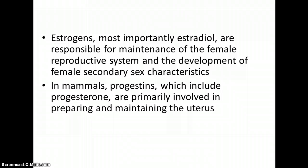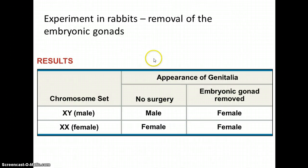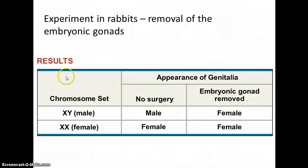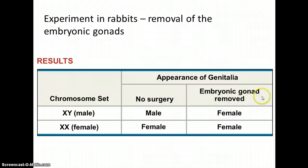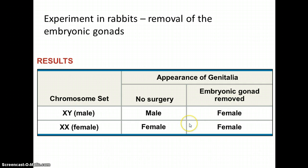Estrogens from the ovaries are involved with the female cycle and maintaining the uterus during pregnancy. Every male mammal starts out embryonically as female, but with the presence of the Y chromosome, those undifferentiated parts develop into male parts because of higher levels of androgens. In an experiment with embryonic rabbits, removing the gonads meant that even XY individuals developed as females, because they lacked the testes and the high levels of androgens. So female is the default pattern for mammals.